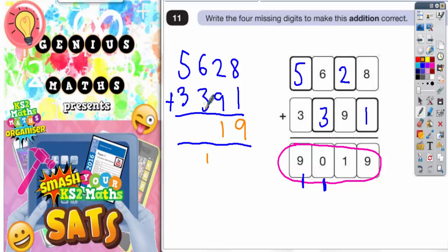6 plus 3 is 9. Plus 1 is 10. So again, we're ending in a 0. So put your 0 in and carry your 1. And 5 plus 3 is 8. Plus the 1 is 9. So we do indeed get back to 9,019, which is what we wanted.